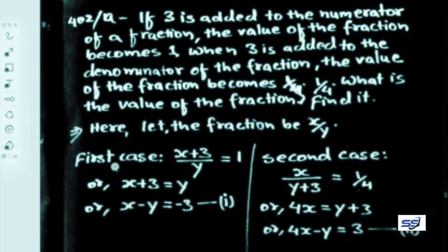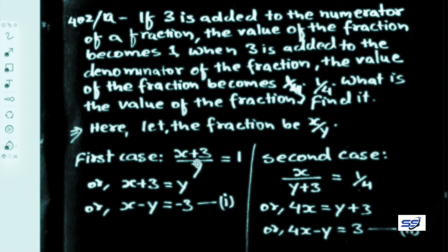From the first case: 3 is added to the numerator, so (x plus 3) upon y equals 1. Cross-multiplying gives x plus 3 equals y, or x minus y equals minus 3. Let this be equation 1.